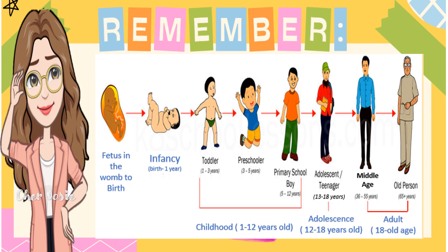Childhood is divided into three: the toddler stage from 1 to 3 years old, the preschooler stage from 3 to 5 years old, and primary school age from 5 to 12 years old. The next stage is adolescence or the teenager stage, from 12 to 18 years old. And lastly, the adulthood stage from 18 years old to old age.